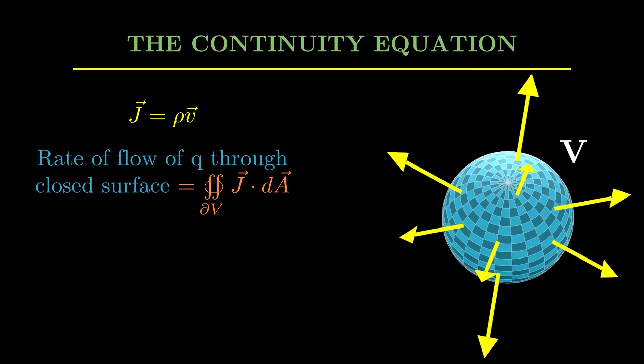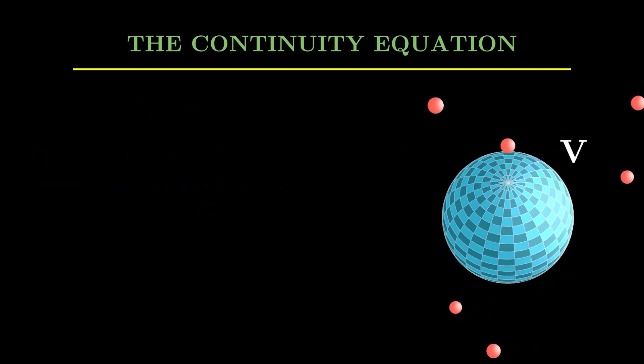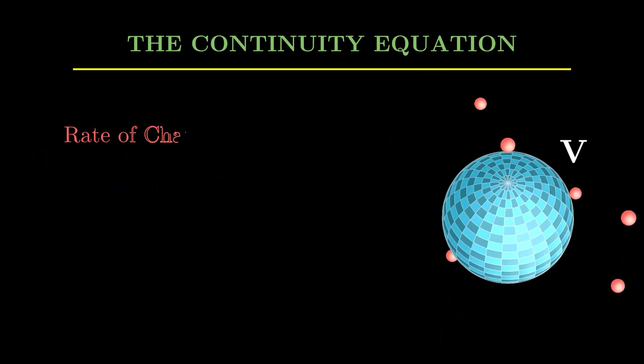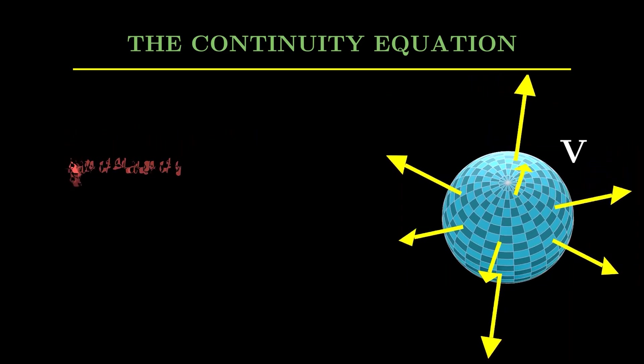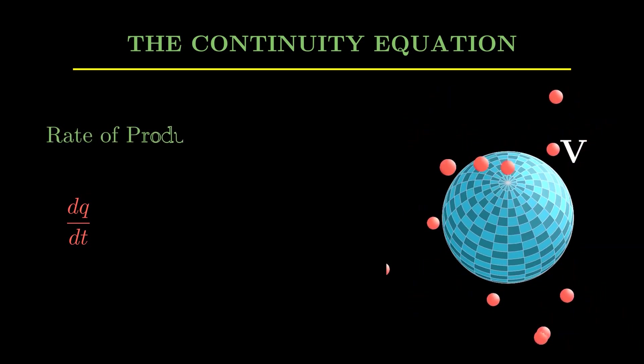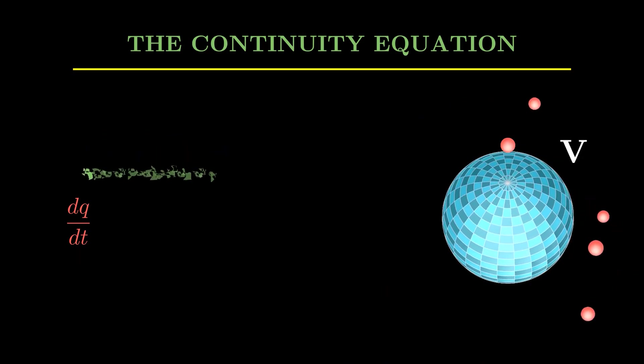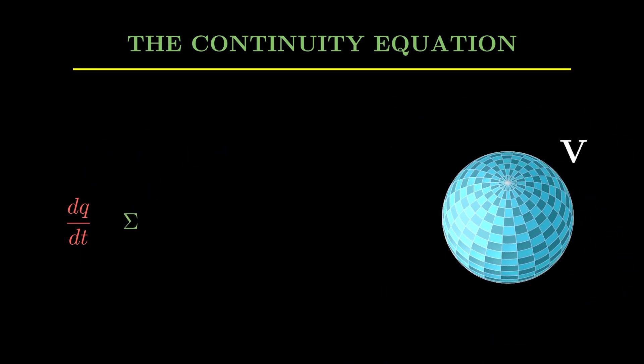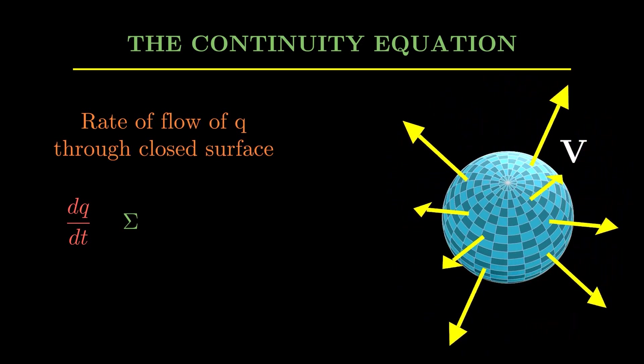All right, now let's think about the rate of change of that quantity Q. What will it be? Well, in terms of calculus it will be dQ over dt, and this will be equal to the rate of production of Q, which we call it capital Sigma, minus the rate of flow of Q through the closed surface.